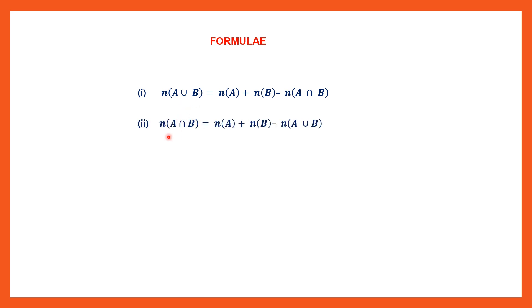If you have to find the cardinal number of A intersection B, there is another formula. You have to find the cardinal number of A, add it with the cardinal number of B, and subtract the cardinal number of A union B. So this is the formula to find the cardinal number of A union B, and this is the formula to find the cardinal number of A intersection B.